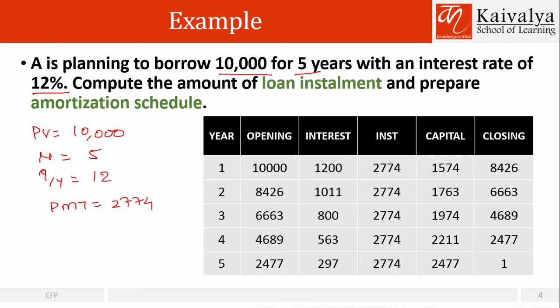Now, very interestingly — which mode are you going to pick? We usually understand that we borrow money today and the installment starts after a period. So unless otherwise suggested in the question, the default mode we should assume for loan computation is End Mode. It is different from investments. So we assume End Mode here — make a note of it — and this is the installment amount.